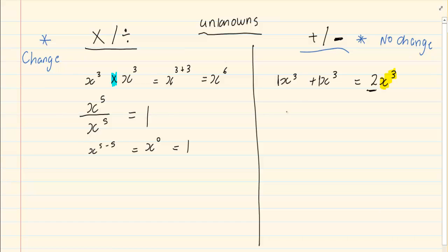Now what happens when we subtract? Let's say 3x to the power of 5 minus 2x to the power of 5. You've got 3 chocolates. You eat 2 up. You are left with 1. But what you need to remember is that the unknowns did not change when we are adding and subtracting.